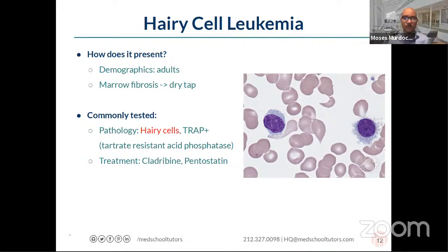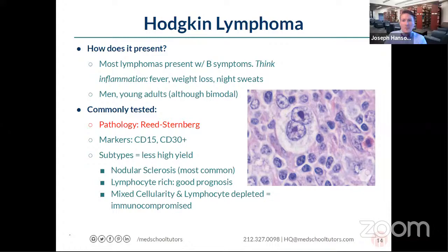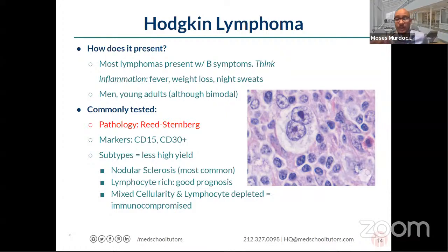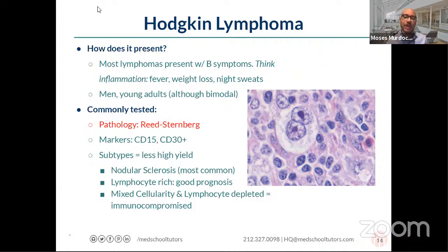Know the Reed-Sternberg cells well — the subtypes are in First Aid but far less likely to be tested. Note that in the actual lymphoma mass, the neoplastic Reed-Sternberg cell (CD15/CD30 positive) is actually a minority of the total tissue. Moving on to Burkitt lymphoma — one of the very aggressive, fast-growing lymphomas. It tends to be a disease of young adults, though demographics shouldn't anchor your answer. B symptoms are common across all lymphomas.